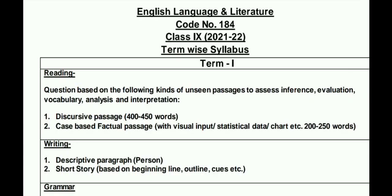English Language and Literature — Class 9 ka jo 2021 and 2022 ka term-wise syllabus jo aaya hai CBSE ka. Term 1 — Reading Section: questions based on the following kinds of unseen passages — two essays, interpretation, evaluation, vocabulary, analysis and interpretation. Discursive passages, case-based factual passages with visual input — data, chart, etc. — 200 to 250 words.